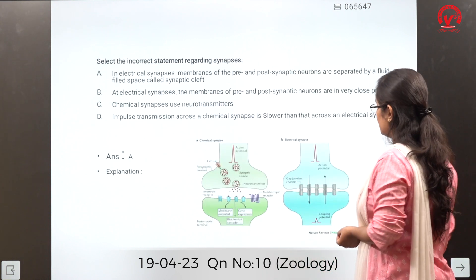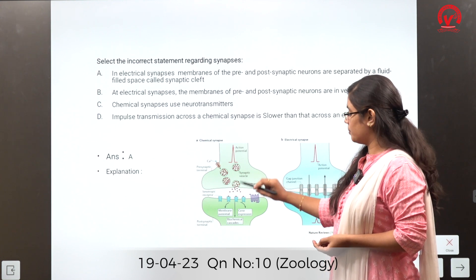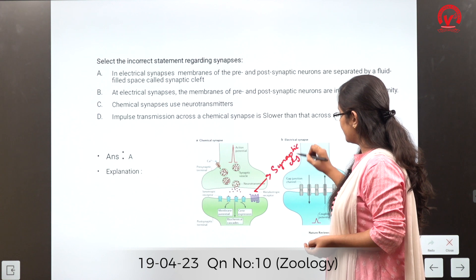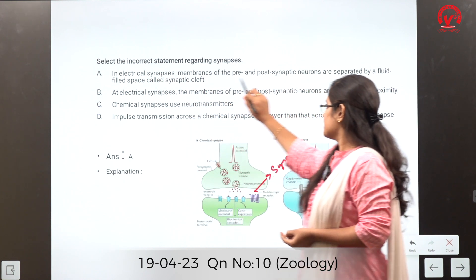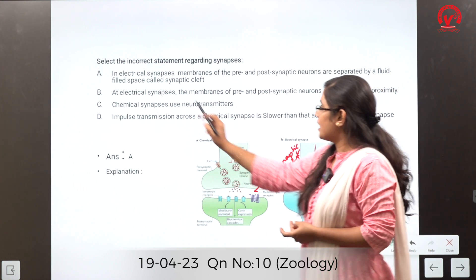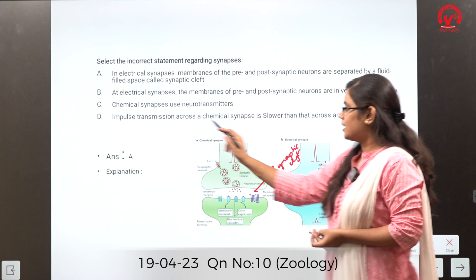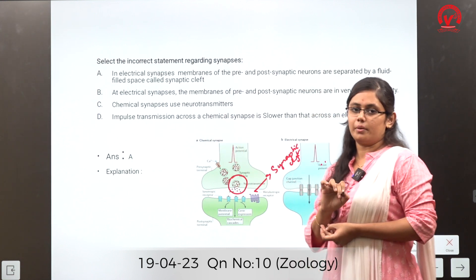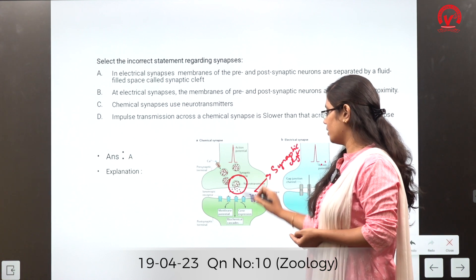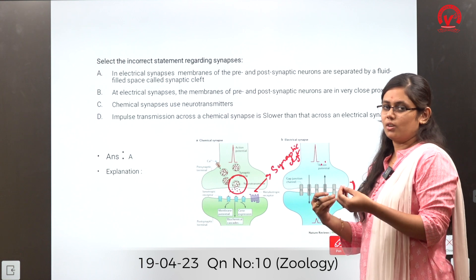In chemical synapses, the space between pre- and post-synaptic neurons is called the synaptic cleft. In electrical synapses, the membranes are in very close proximity — there is no synaptic cleft. Chemical synapses use neurotransmitters for impulse transmission, making them slower. Electrical synapse transmission is faster, more like transmission in an axon. So option A is incorrect, and all other statements are true.